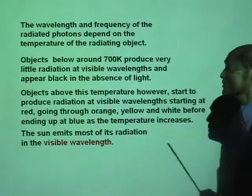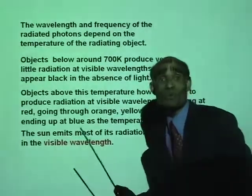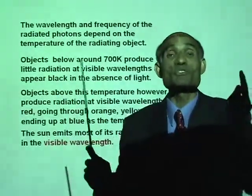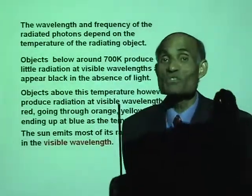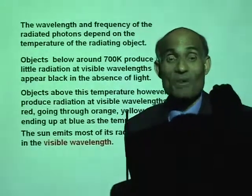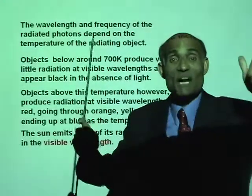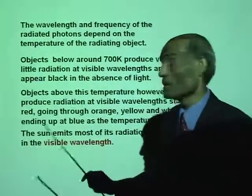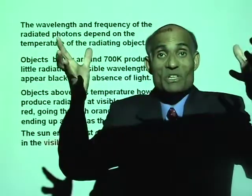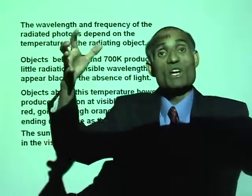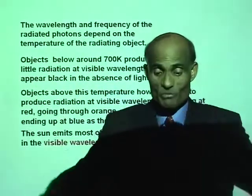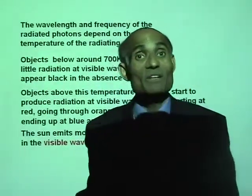The sun emits most of its radiation in the visible wavelength. Most of the light emitted from the surface of the sun — what is the surface temperature of the sun? It's about 5,500 degrees Celsius. The light coming at that temperature is all in the visible. But also from the sun comes infrared, which are heat rays, ultraviolet, and so on. There is a wide spectrum of radiations coming from the sun.